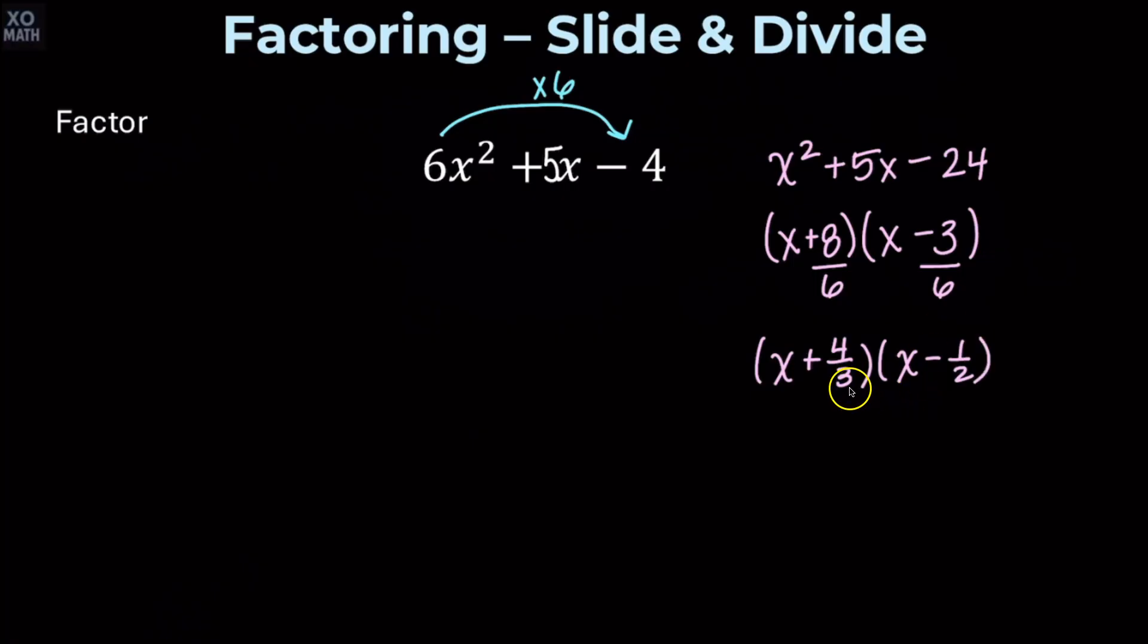So what we still need to do is move that bottom number to the front of the x in each of these cases to get the final answer factorization for the original problem. We're going to have 3x plus 4 times the quantity 2x minus 1.